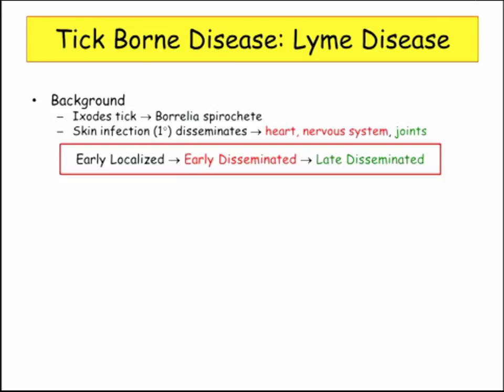There are three phases: early localized, right after the tick bites you; then it disseminates — still considered early disseminated — when it goes elsewhere in the skin, heart, and nervous system; and then late disseminated, mostly in the joints. It can hide in the nervous system too, but they're not going to ask you about that.